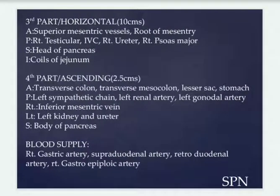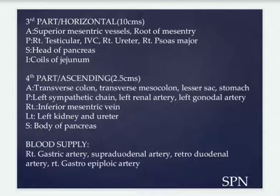The third part, D3, is the most important — it is horizontal and 10 centimeters long. Anteriorly: superior mesenteric vessels and root of mesentery. Posteriorly: right testicular vessels, inferior vena cava, right ureter, and right psoas major. Superiorly: head of pancreas. Inferiorly: coils of the jejunum.